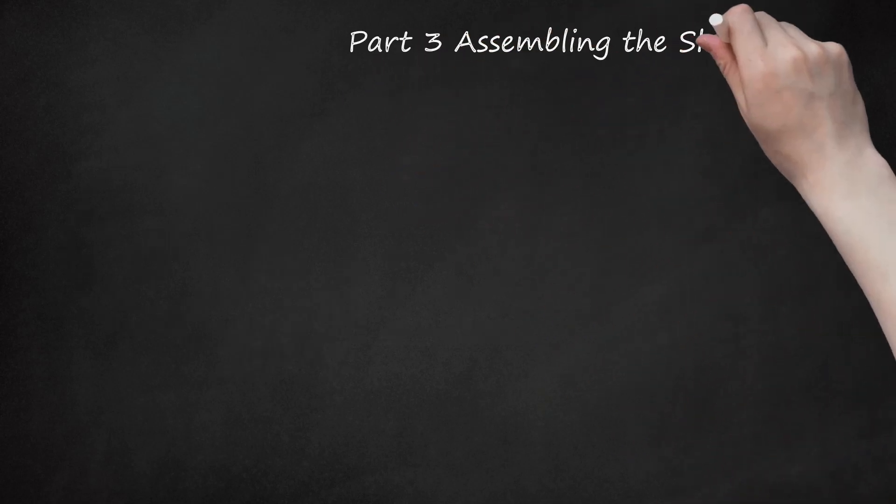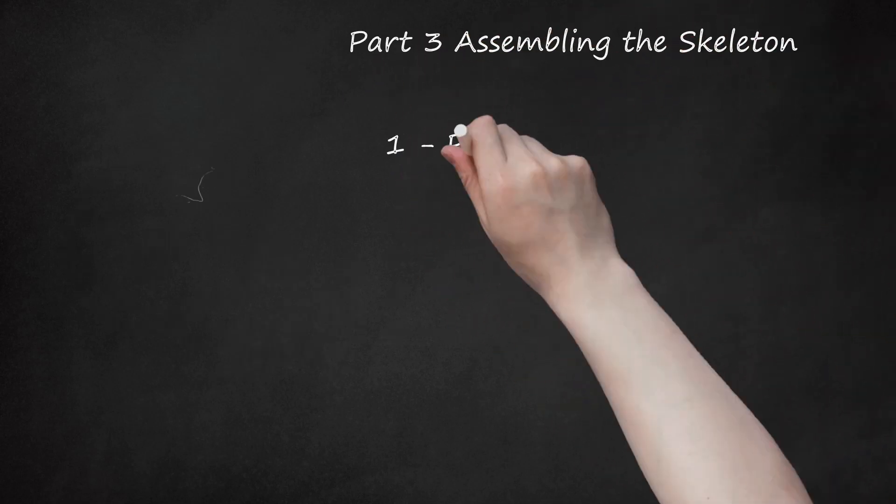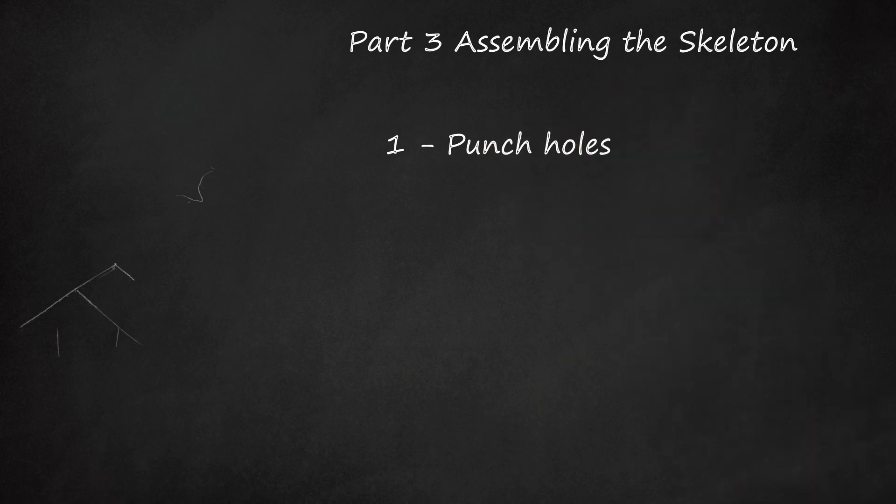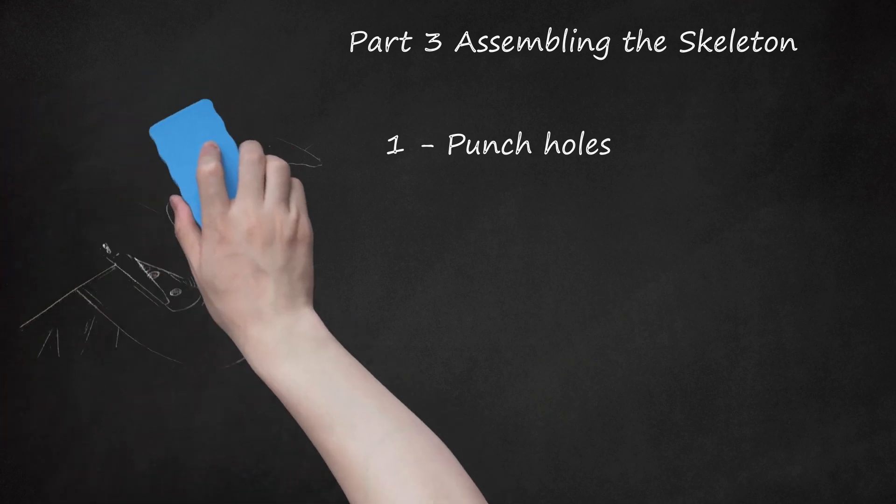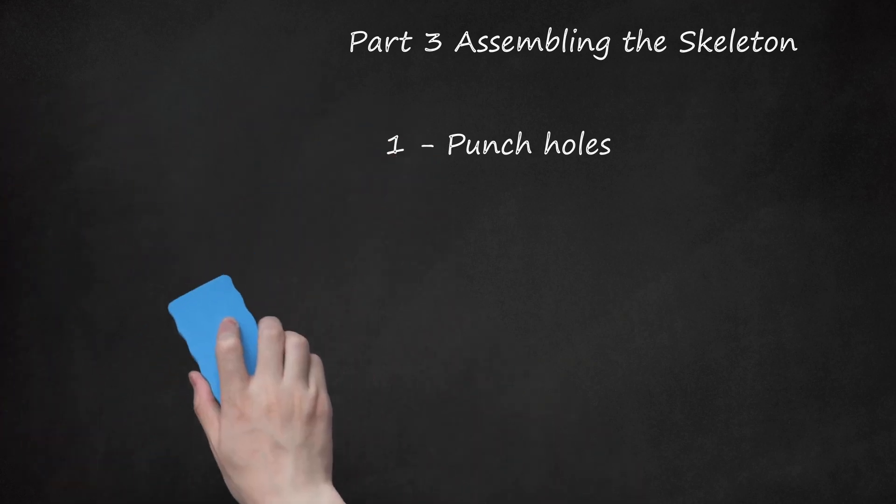Part 3: Assembling the Skeleton. Step 1: Punch Holes. Use a hole puncher to add holes to connect the parts of your skeleton. If you don't have a hole puncher, use a scissor or a knife. Punch one hole at the bottom of the skull. Punch a hole at the top of the ribs to connect the skull and at the bottom of the ribs to connect the pelvis. Punch one hole in the top of the pelvis. Punch holes in the top and bottom of the upper arms and upper legs. Punch holes at the top of the lower arms and lower legs.